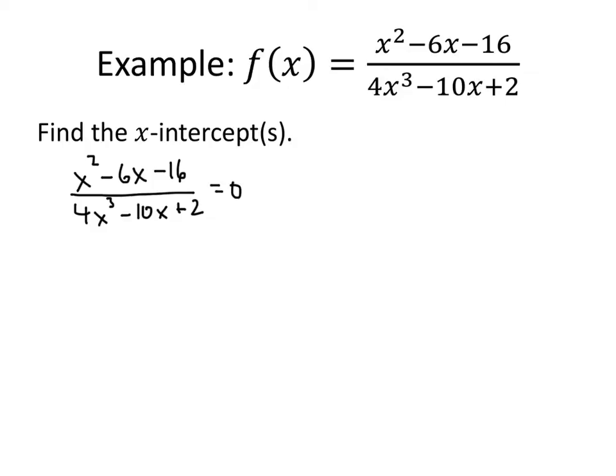And what we're going to do is we're going to multiply both sides of this equation by that big denominator, 4x cubed minus 10x plus 2. I can't really squeeze it in there, so I'll just write it over here: 4x cubed minus 10x plus 2. But on the left-hand side, these divide out. And on the right-hand side, we just get 0. So all we have is x squared minus 6x minus 16 equals 0.